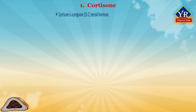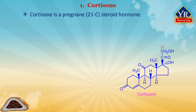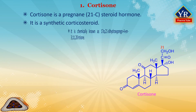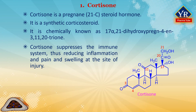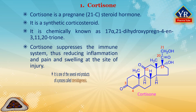Coming to the individual drugs: cortisone. Cortisone is a pregnane steroid hormone. It is a synthetic corticosteroid which is not secreted or released by the adrenal gland. It is chemically 17-alpha,21-dihydroxypregn-4-ene-3,11,20-trione. It is closely related to cortisol, a compound which is released by the adrenal gland. It is used to treat a variety of ailments and can be administered intravenously, orally, intra-articularly (into a joint), or transcutaneously. Cortisone suppresses the immune system, thus reducing inflammation and attendant pain and swelling at the site of injury. It is one of the several end products of a process called steroidogenesis.